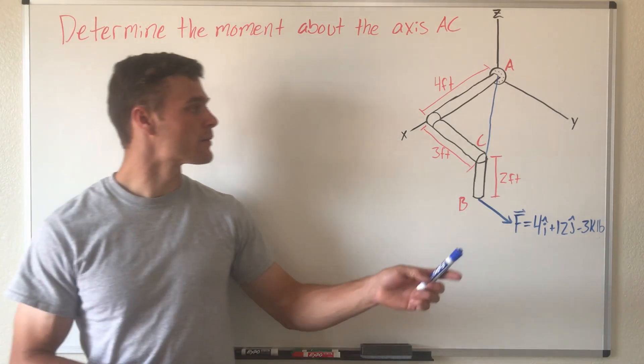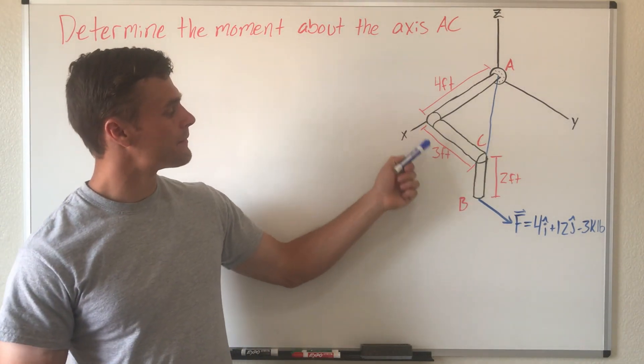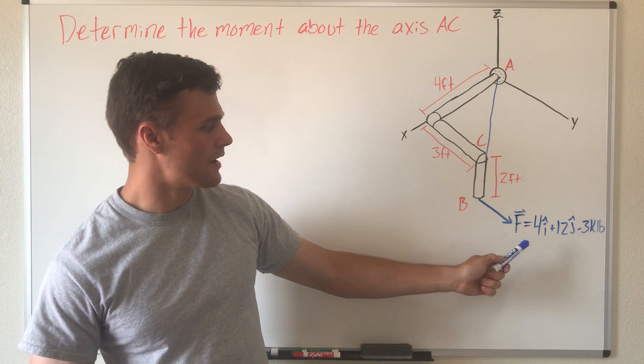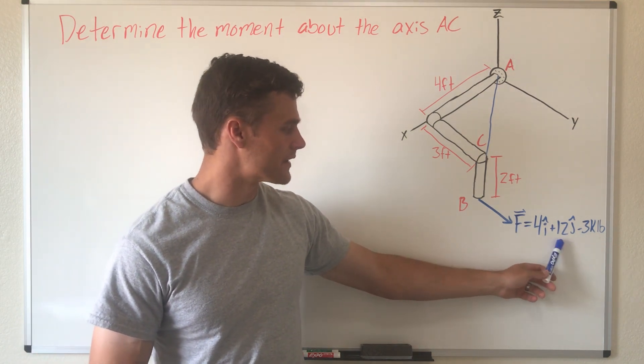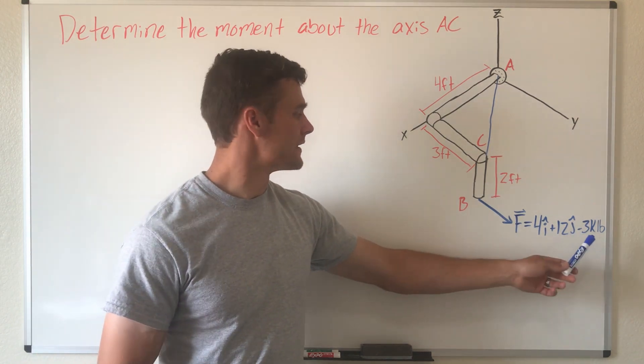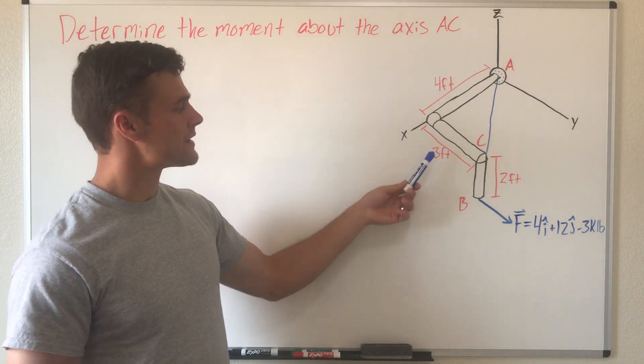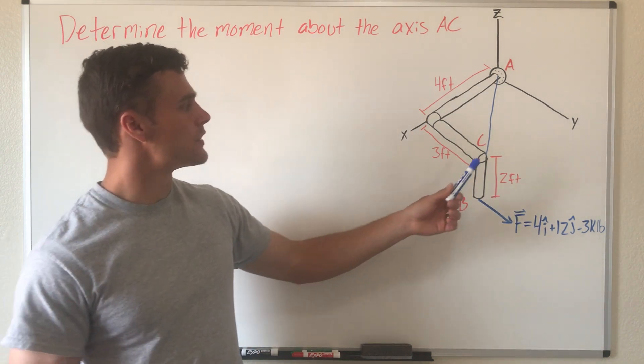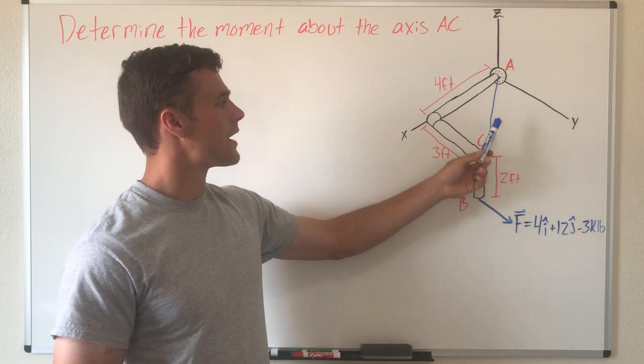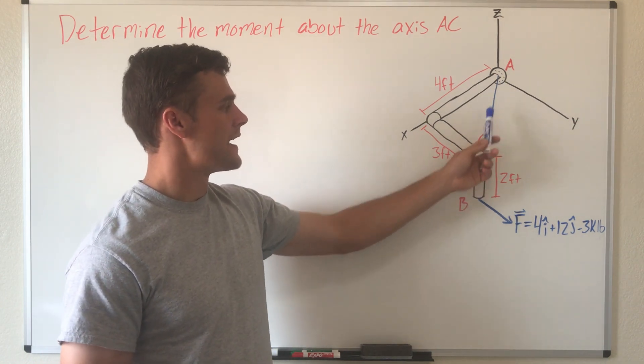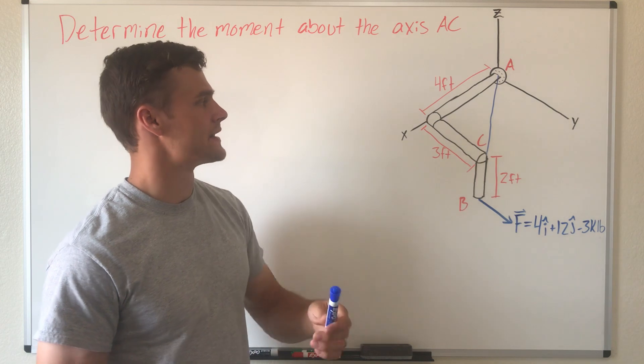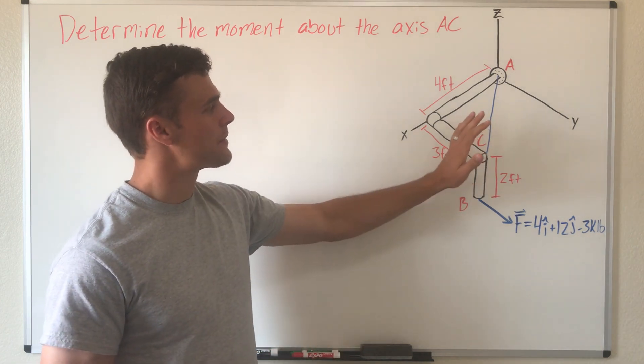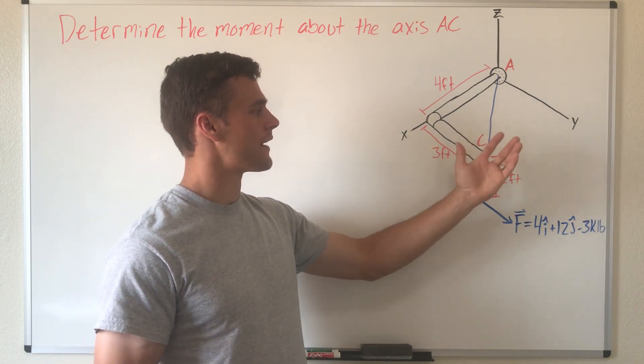So what we have here is a pipe that is being pulled on at the end by a force represented by this Cartesian vector in pounds, and our measurements are in feet. What we're trying to do is solve for the moment about this line that goes from point A to point C, which is how much the pipe is rotating around that line.